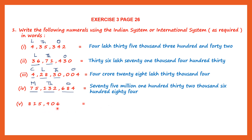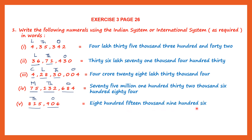Now here again we have one, two, three, comma, one, two, three — no other comma. So this is the international system, commas after every three digits. The places are ones, tens, hundreds, thousand, ten thousand, hundred thousand. The ones period is ones, tens, hundreds; the thousands period is thousands, ten thousands, and hundred thousands. So now let's read it: eight hundred fifteen thousand, nine hundred six.